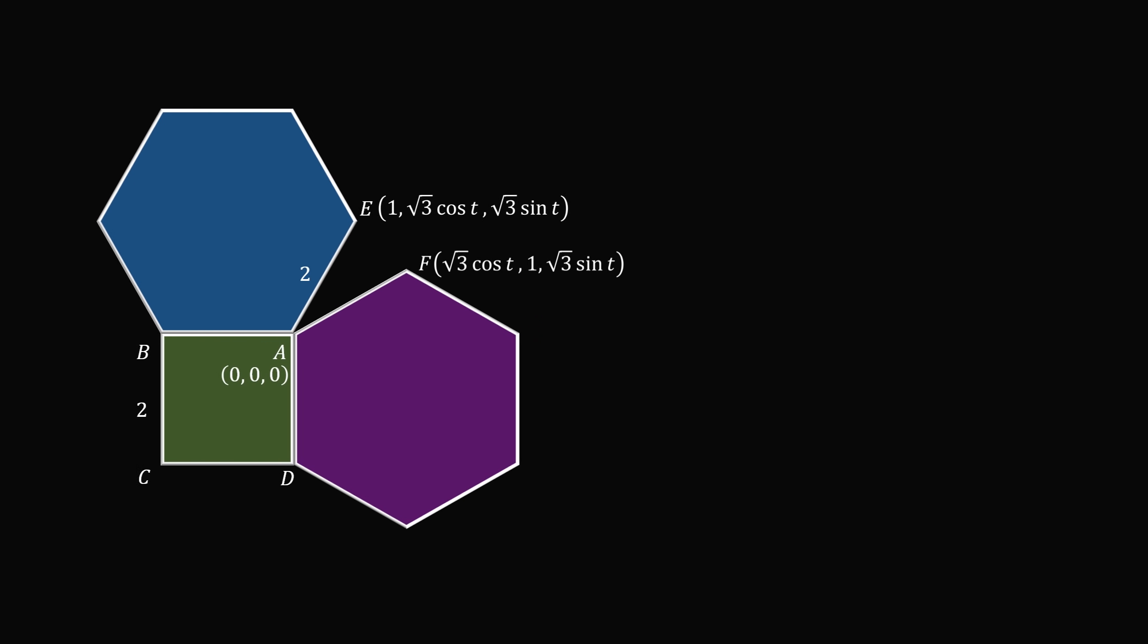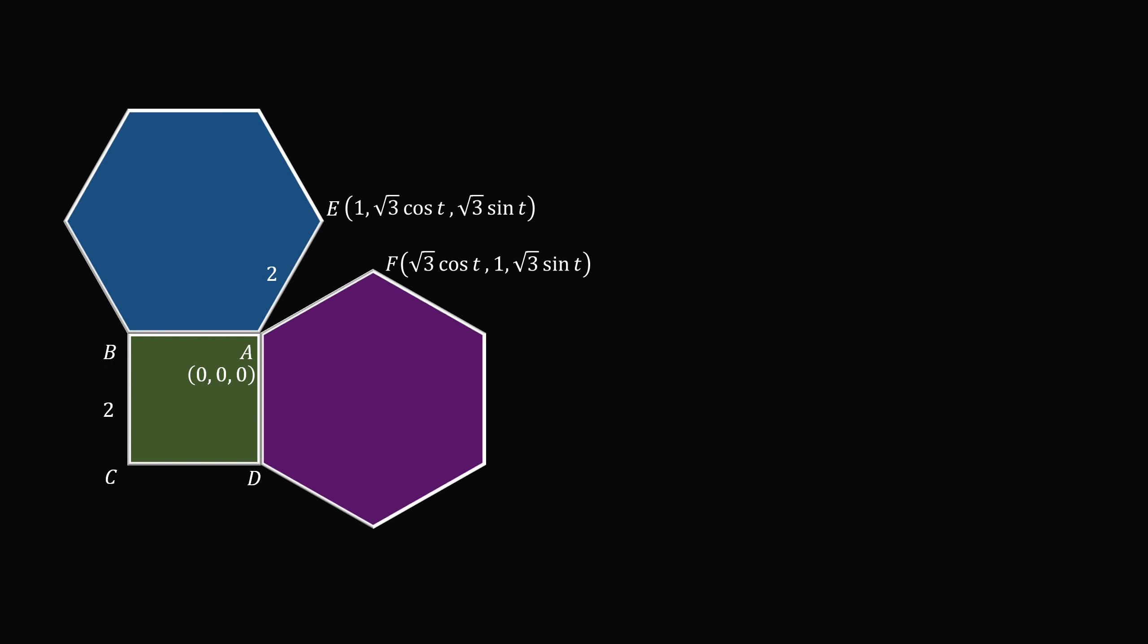Now how can we solve for t? We want to rotate the two hexagonal flaps such that E is equal to F. That means the first coordinates and the second coordinates have to be equal. This implies that 1 is equal to the square root of 3 times cosine t.